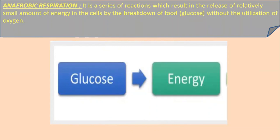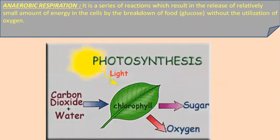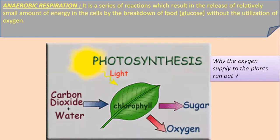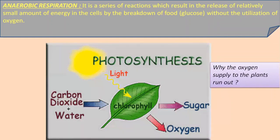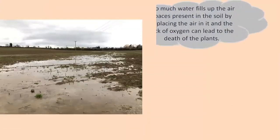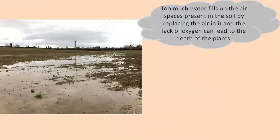You must be thinking that when oxygen gas is released by plants and trees themselves during photosynthesis, how come the oxygen supply to plants runs out? Why do plants have to undergo anaerobic respiration? This may happen when the soil gets waterlogged because too much water fills up the air spaces present in the soil, replacing the air in it. The lack of oxygen can lead to the death of plants.